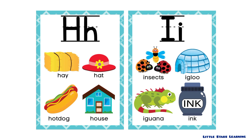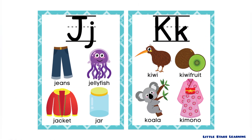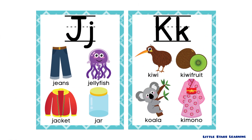H is for hay, hat, hot dog, and house. I is for insects, igloo, iguana, and ink. J is for jeans...